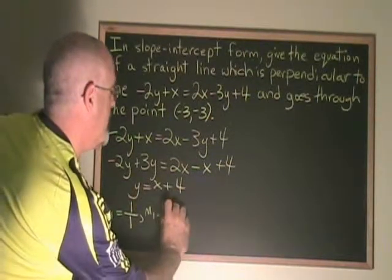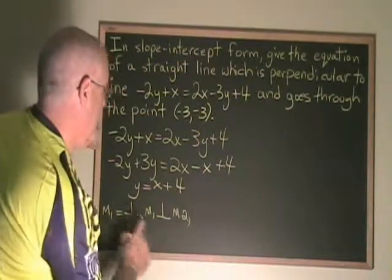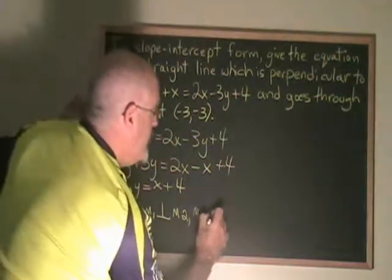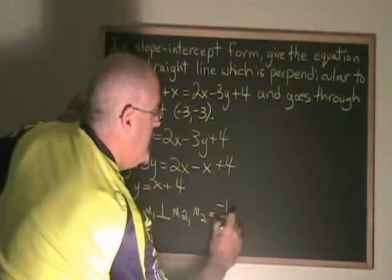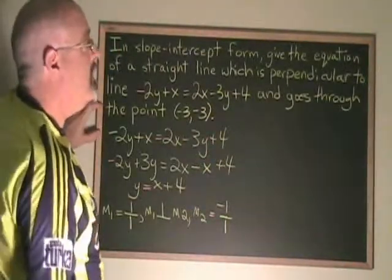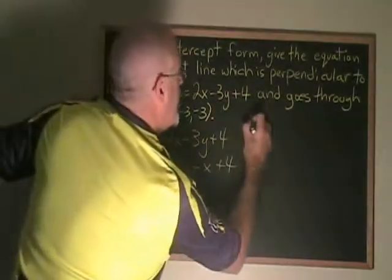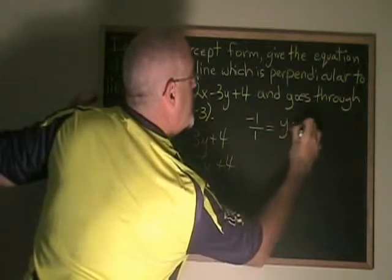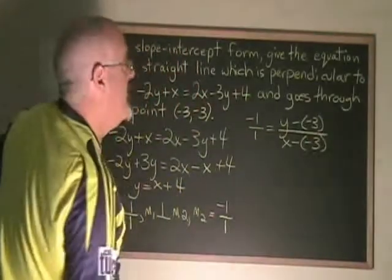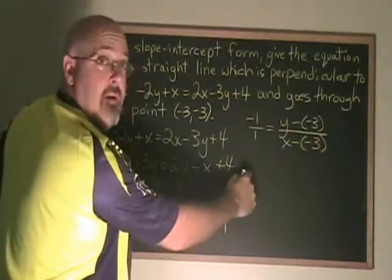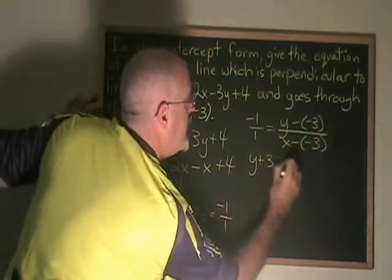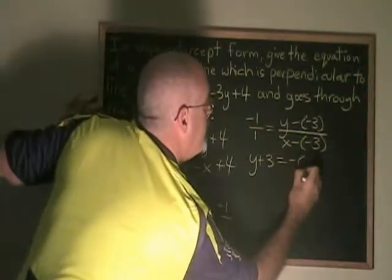Slope 1 is perpendicular to slope 2. Therefore, slope 2 must be equal to the negative reciprocal of 1 over 1, which is negative 1 over 1. Using this slope and the point (-3, -3), we can derive the equation of the line we are looking for. Negative 1 over 1 equals y minus negative 3 over x minus negative 3. I want slope-intercept form, so I'm going to do bottom times top: y plus 3 equals top times bottom, negative x plus 3.